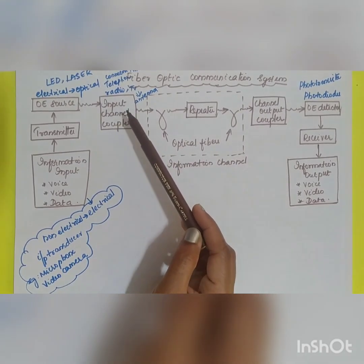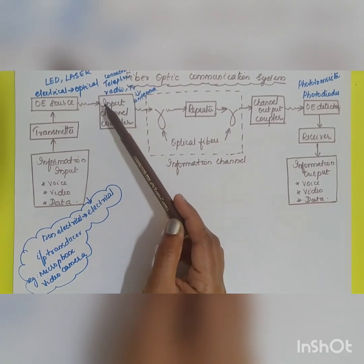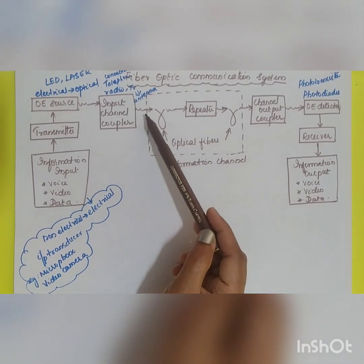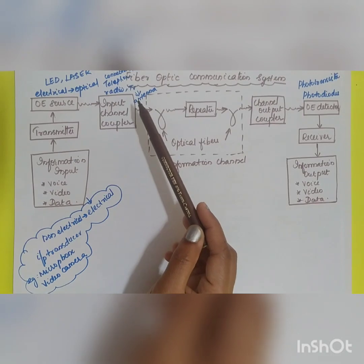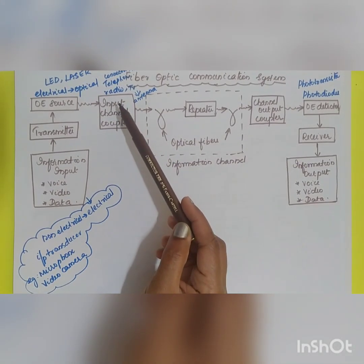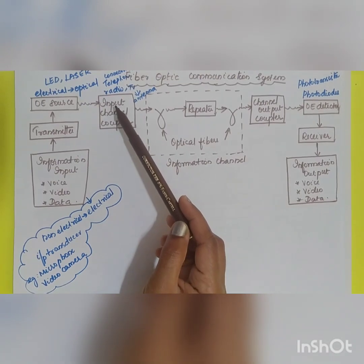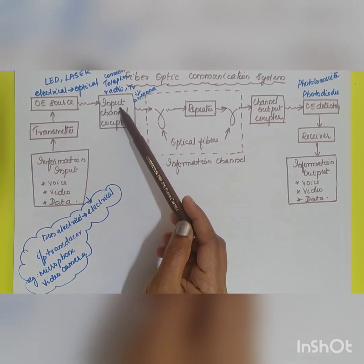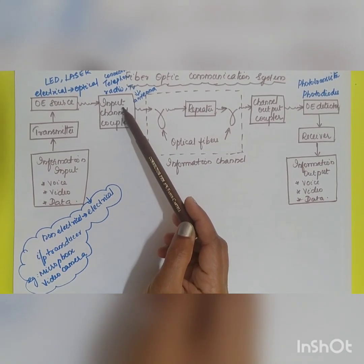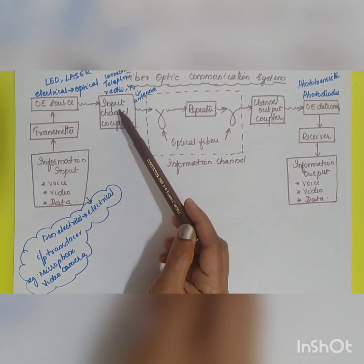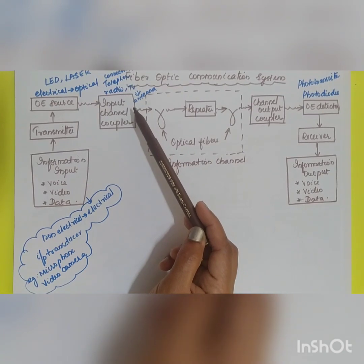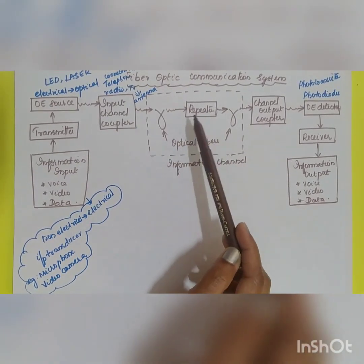The next stage is the input channel coupler, which is used to couple the signal from one stage to another — specifically from the optoelectronic source to the information channel or transmission line. It can be of two types: if the channel is unguided (like radio or TV), the coupler will be an antenna; if it is a guided channel (like a telephone link), the coupler will be a connector for attaching the transmitter to the cable. Its function is to collect the light signal from the optoelectronic source and send it into the optical fiber cable.